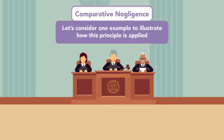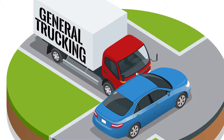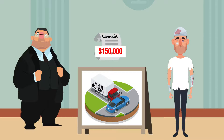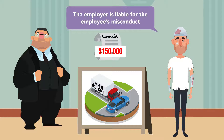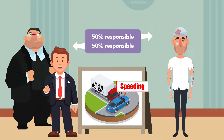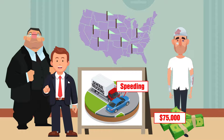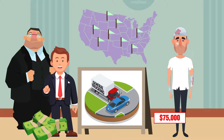Example: A motorist is involved in a car accident with an employee of General Trucking Company, sustains serious injuries, and sues the employer for $150,000, alleging the employer is liable for the employee's misconduct. During trial, the employer's attorney adduces evidence that, at the time of the accident, the motorist was speeding, and as such, the jury returns a verdict holding the employer 50% responsible and the motorist 50% responsible. As a result, the motorist's recoverable damages will be $75,000. Some states have enacted a modified comparative negligence defense in which damages are apportioned between parties unless the injured party is deemed to be 50% or more at fault, in which situation the injured party is not entitled to recover any damages.